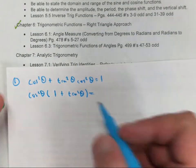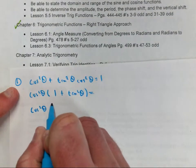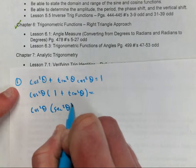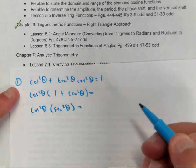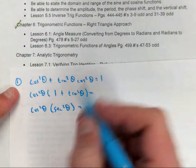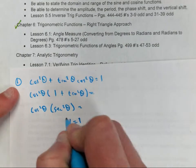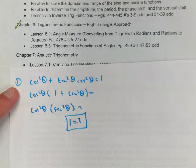So what's 1 plus tangent squared? And aren't those reciprocals of each other? So what would that be equal to? 1. So you just proved that. That would be a reciprocal identity.